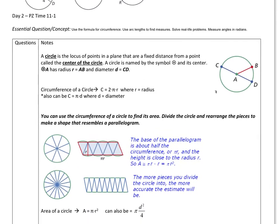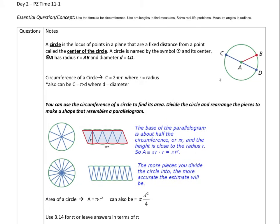Over here, we're going to start off with the definition of a circle, which you should already know. The circle is a set of all points equidistant from a given point. We can also write it as the locus of points in a plane that are a fixed distance from a point, and this given point we will call the center. So a circle is named by this symbol, and we have a radius, and we have a diameter.